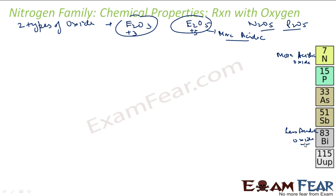For example, if you see the oxides of phosphorus and nitrogen, they are acidic. For example, P2O4, N2O5, they are all acidic.